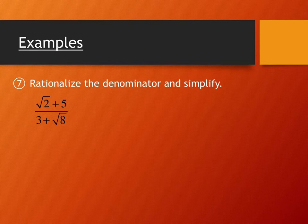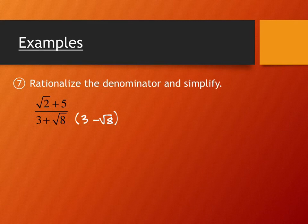Instead, we multiply by the conjugate. The conjugate is the same two terms as in the denominator, but with the opposite sign in the middle. So the conjugate for 3 plus square root of 8 is 3 minus square root of 8. There's also a conjugate for the numerator — it would be square root of 2 minus 5 — but we don't need it. We multiply both numerator and denominator by the conjugate of the denominator.